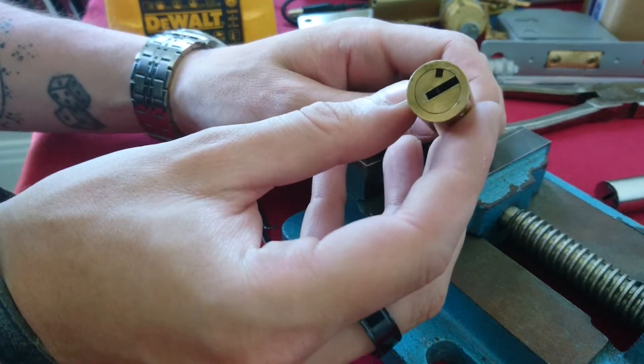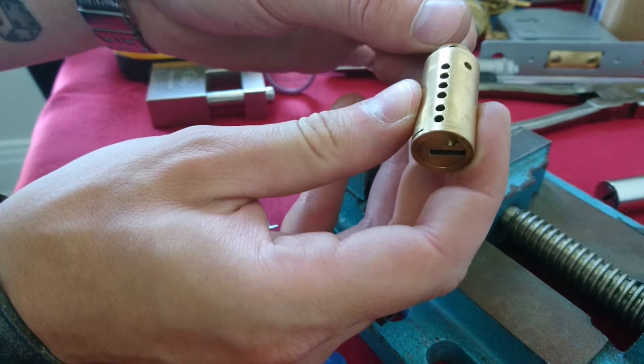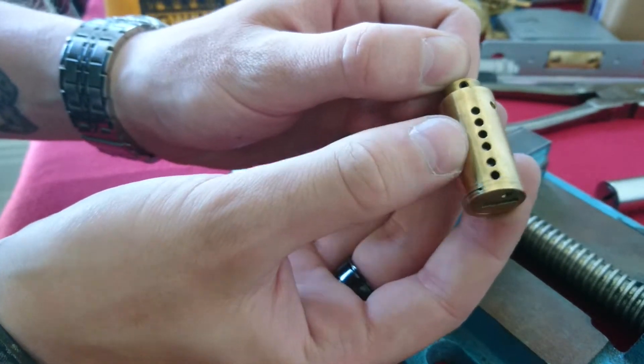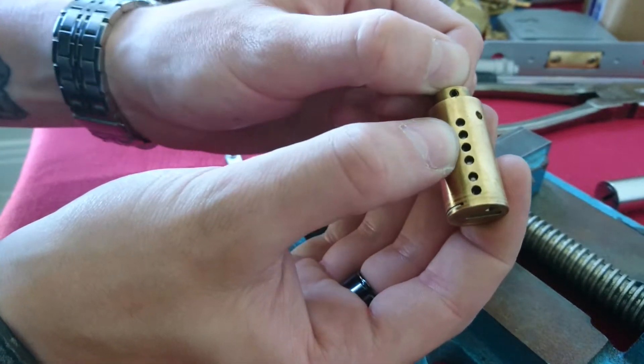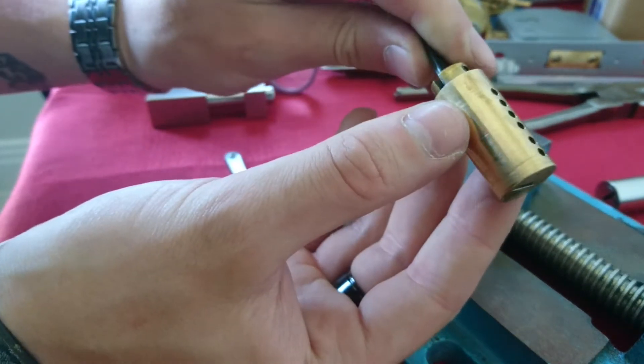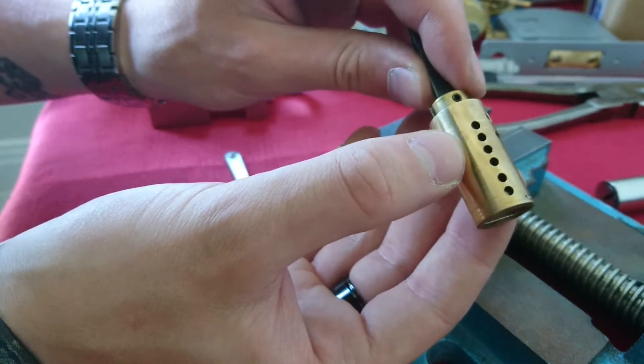So, only two pin stacks out of that one needed to be picked. And I'm looking down in the top here. I can see that these ones at the back, they're not at the shear line already. They need to be picked. Well, they should be anyway.